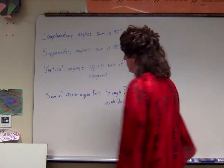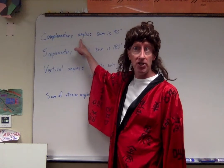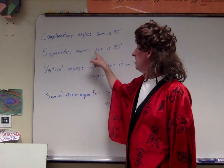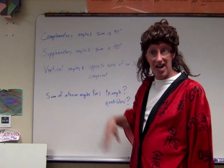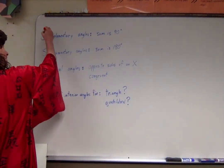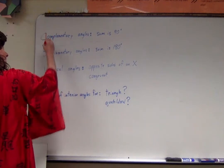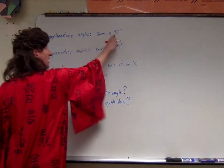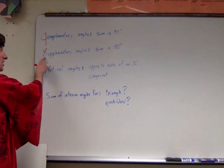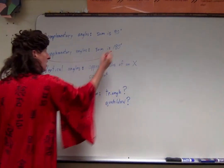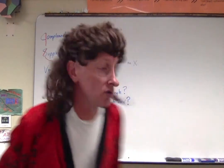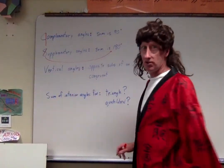Complementary angles are angles that add up to 90 degrees. Supplementary angles are angles that add up to 180 degrees. Here's a little trick: I take my magic marker and turn that C into a nine — nine zero — that reminds me it's up to 90 degrees. For supplementary, I draw a little sideways line so it looks like an eight, and that reminds me it's 180 degrees. Complementary, supplementary — don't you dare forget those.